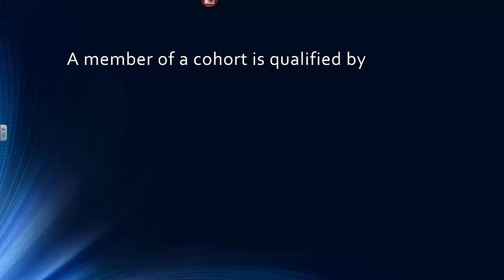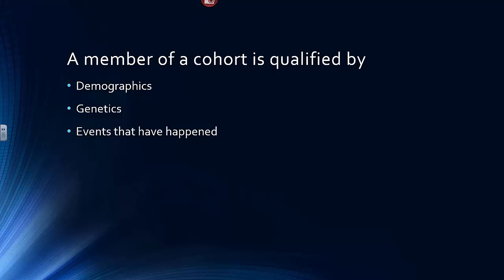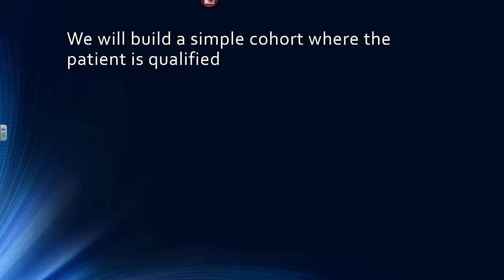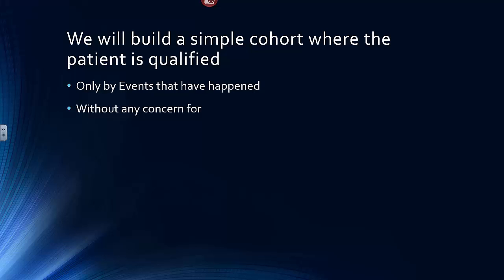A member of a cohort is qualified by demographics — I want all males, I want all females — by genetics, which will become more and more relevant in the future, and by events that have already happened. We will build a simple cohort where the patient is qualified only by events that have happened, without any concern for demographics, genetics, or the temporal sequences of those events.